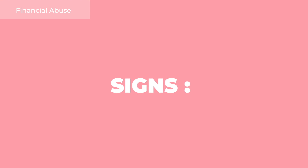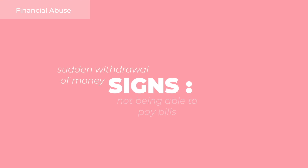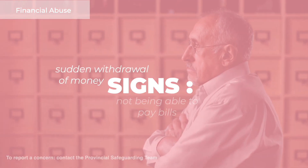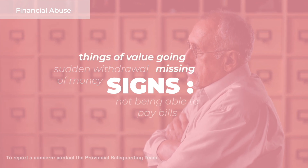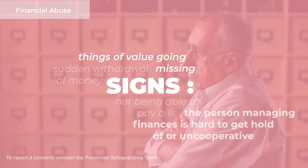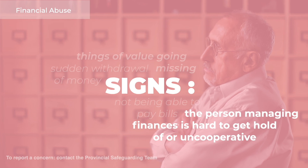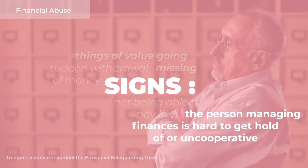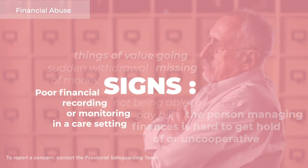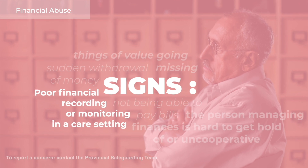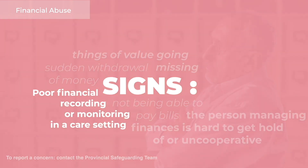Signs and symptoms of financial abuse include not being able to pay bills with no explanation, sudden withdrawal of money from accounts, things of value going missing. The person managing finances may be hard to get hold of or uncooperative, or there is poor financial recording or monitoring in a care setting.